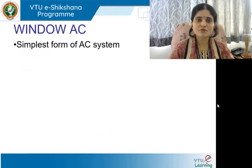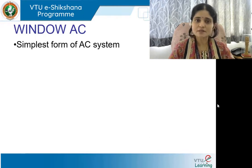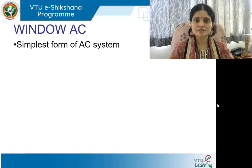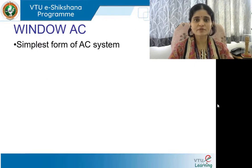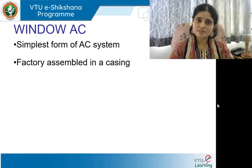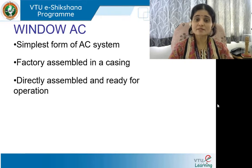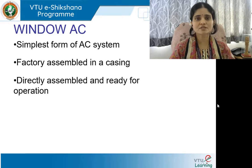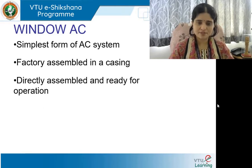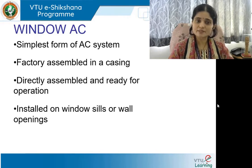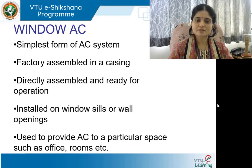Window AC is the simplest and most basic form of AC system. Just as the ceiling fan was the basic form of mechanical ventilation, window AC is the simplest form of air conditioning. It is factory assembled and comes in a casing — directly assembled and ready for operation, installed on window sills or wall openings. It is used to provide AC to a particular space such as an office, bedroom, living space, or dining room.